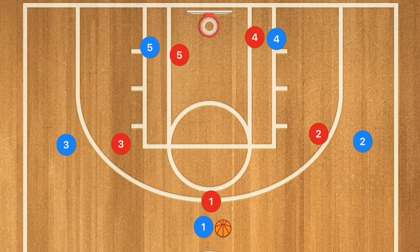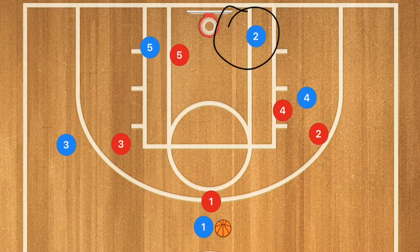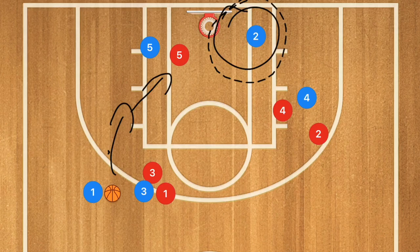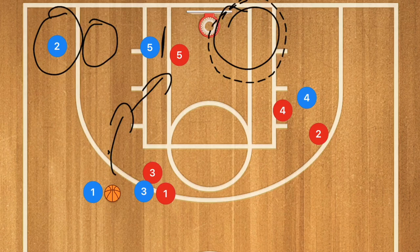This third basketball play is a 3-out, 2-in basketball offense. Player 4 sets a screen for player 2, who cuts towards the rim and may be open for a layup. While this is happening, player 3 sets a screen for player 1, who could take a few steps in and take the shot. Player 2 then continues out and uses player 5 as a screen, possibly open in the mid-range or three-point area, giving us multiple scoring options.